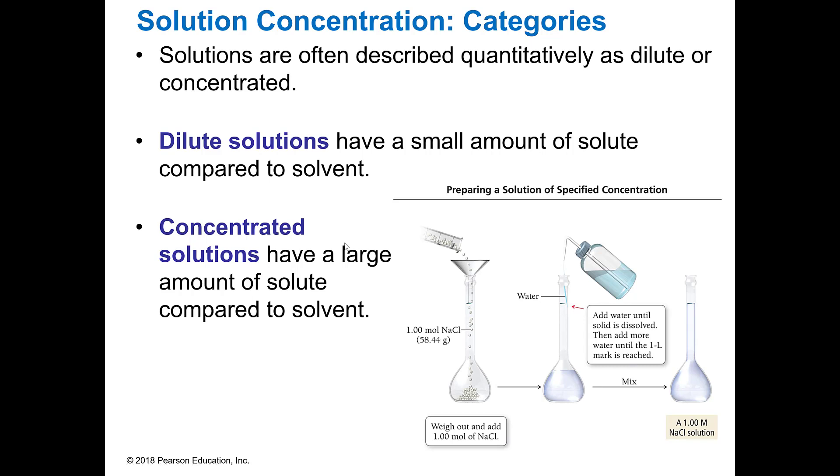Solutions are usually quantified, so we can tell you how much of something is in something else. Or we could just generally say they're dilute or concentrated, which obviously dilute means low concentration—a small amount of solute compared to the solvent—or a concentrated solution where you have a large amount of solute compared to the solvent.